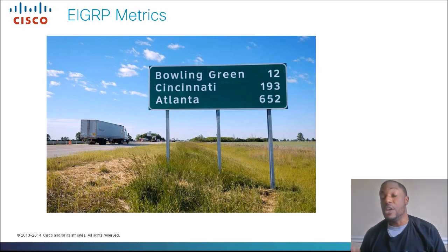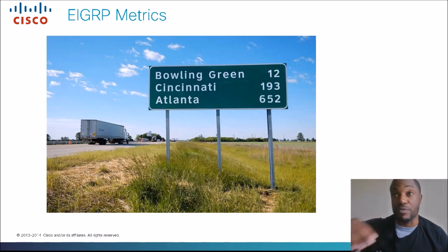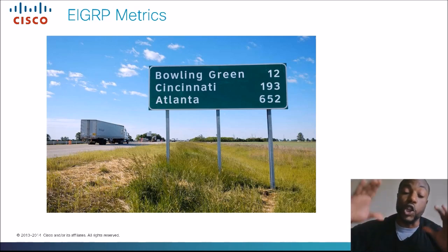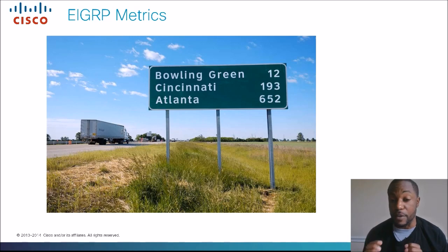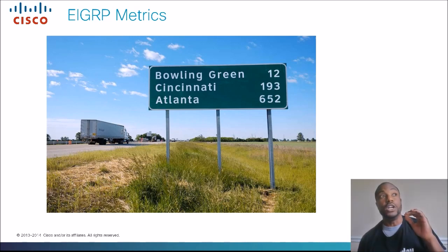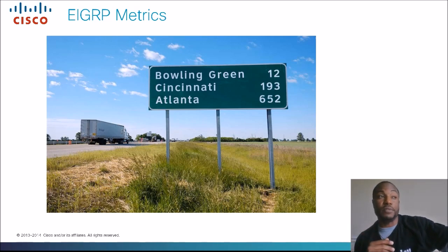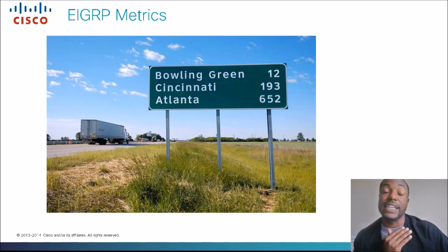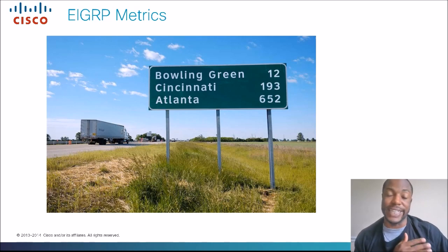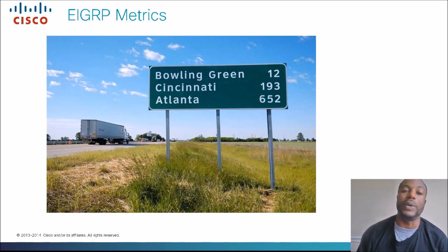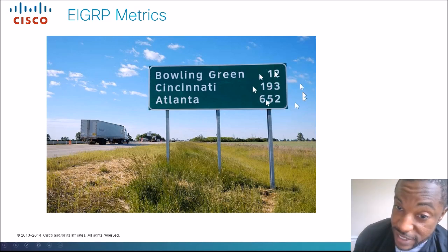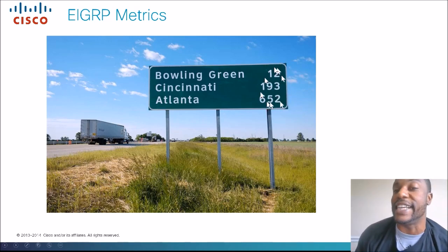For example, an easy one: RIP uses hop count as a metric. We always use the lower number — the lower the metric, the better. That goes with all routing protocols. So if we have an RIP destination that says it is four hops away, then we have another one that says it's two hops away to the same destination — obviously we're going to take the route that takes two hops. The mileage or cost it takes to get there would be our metric.